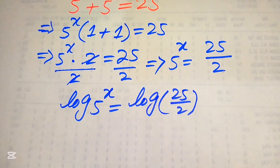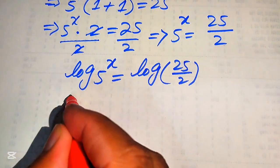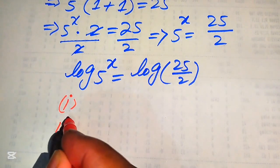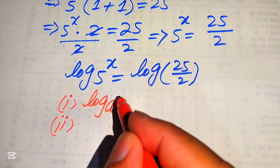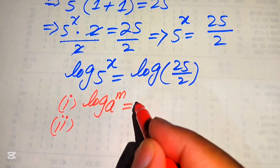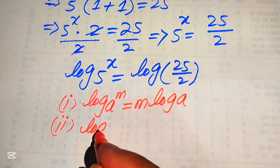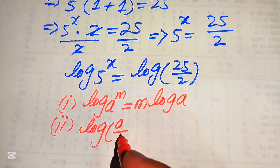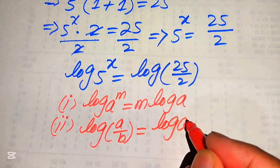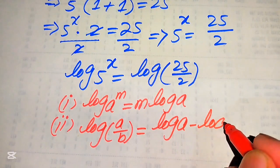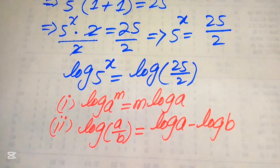After applying the log, we need the properties of log. We use two properties: the first property is that log of a to the power of m equals m times log a. The second property is that log of a over b equals log of a minus log of b.